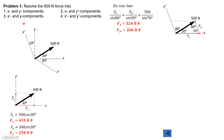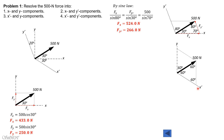For the x prime and y axis components, we draw the parallelogram. The angle here is 60 degrees, and because all angles in the triangle formed are 60 degrees, this is an equiangular — or equilateral — triangle. The property of an equilateral triangle is that all sides are equal, so since one side is 500 newtons, the other sides are also 500 newtons. Therefore Fx prime is 500 newtons and Fy is also 500 newtons.